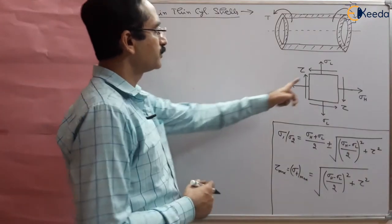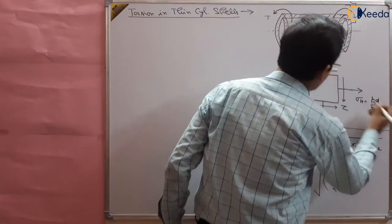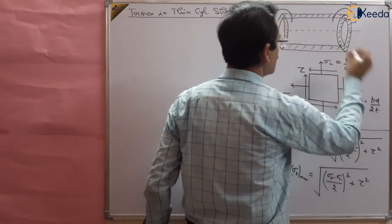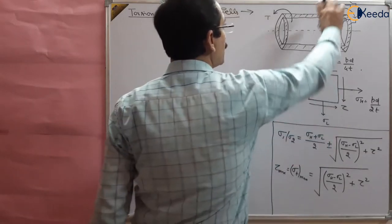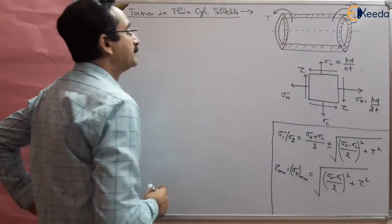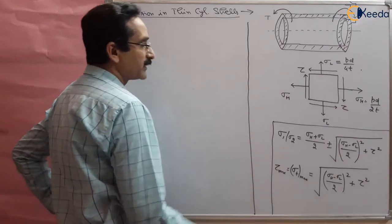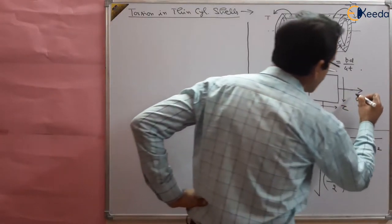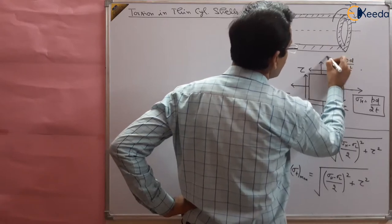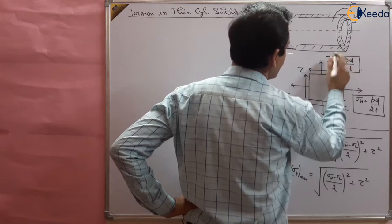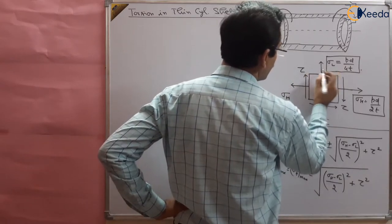Now sigma_h and sigma_l are known to us. Sigma_h is given by pd/2t and sigma_l is given by pd/4t. These are known to us. But what is the value of tau — the shear stress? If a torque is applied, how do we find the value of shear stress? The other values sigma_h and sigma_l are already known, but we need to determine the value of tau.